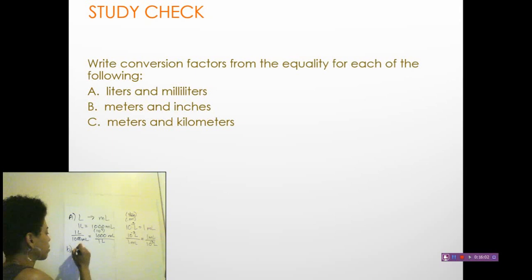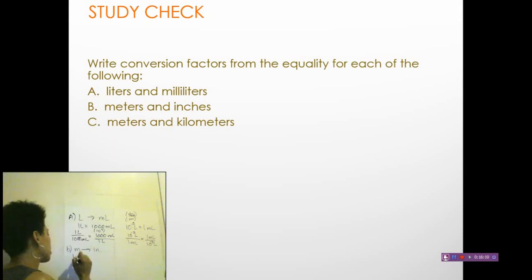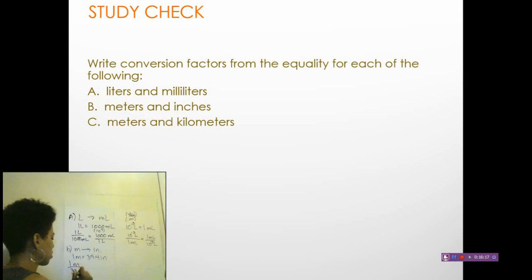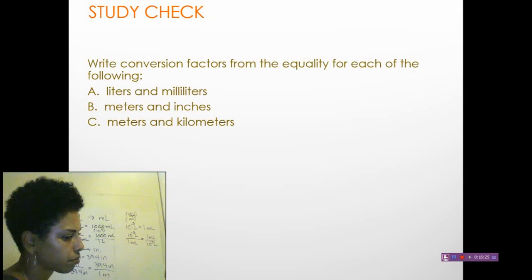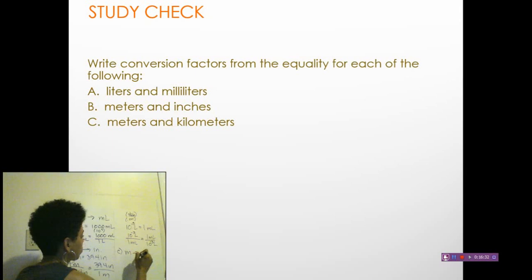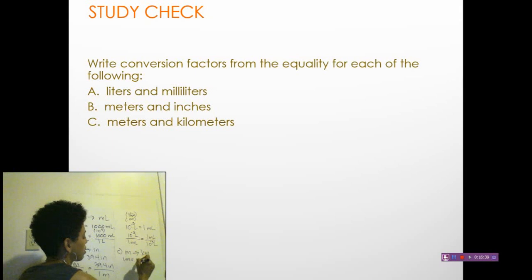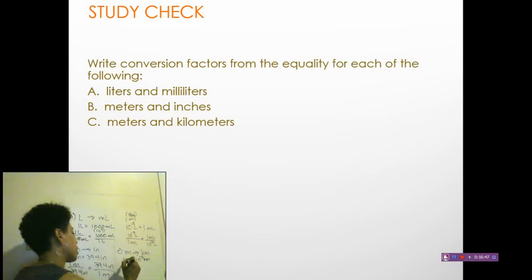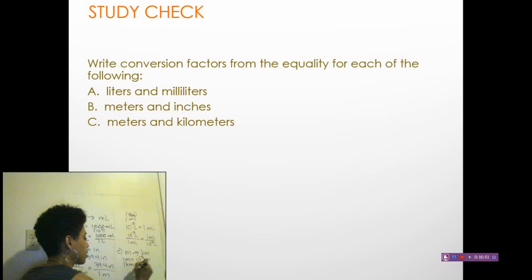For meters and inches: from the chart, one meter equals 39.4 inches, so the conversion factors are one meter over 39.4 inches, or 39.4 inches over one meter. For meters to kilometers: one meter equals 10⁻³ kilometers, or equivalently, one kilometer equals 10³ meters — and the conversion factors follow from those equalities.